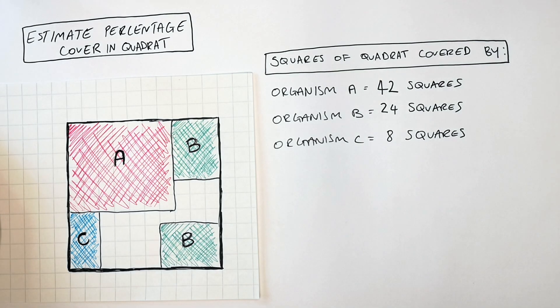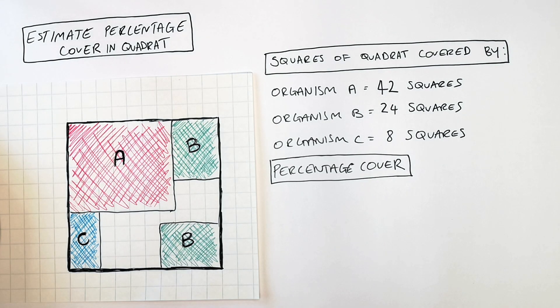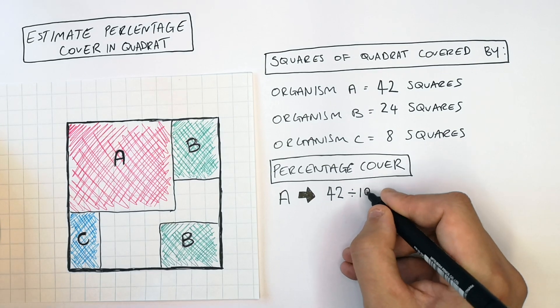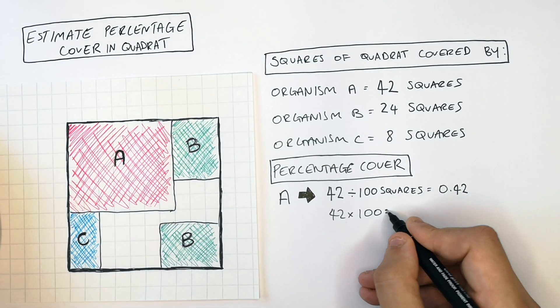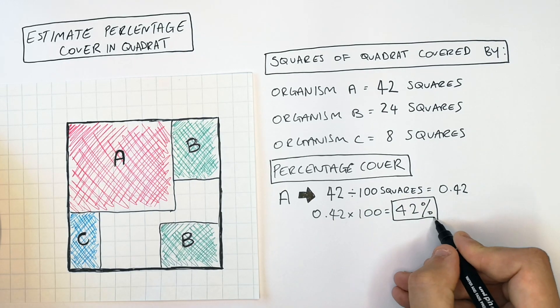You can estimate the percentage cover within a quadrat. So there are 42 squares divided by 100 squares. Then you multiply the answer by 100 to get a percentage, so that'd be 42%.